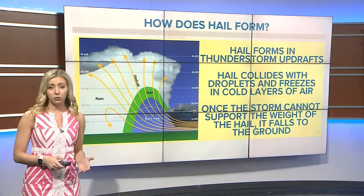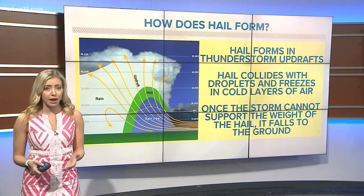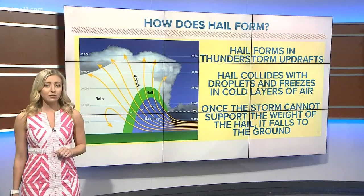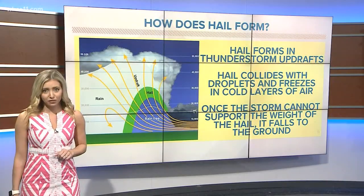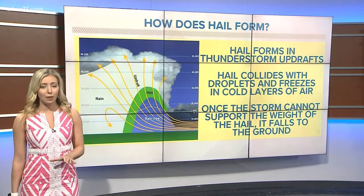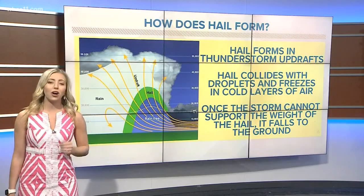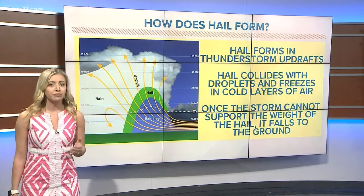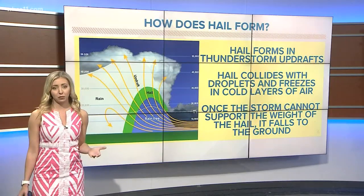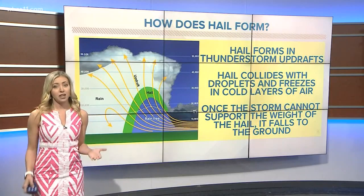The hail rises into colder layers of the atmosphere and freezes. As it rises and moves in the cloud, it encounters other droplets, which can cause it to grow.